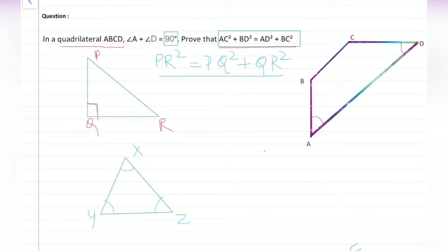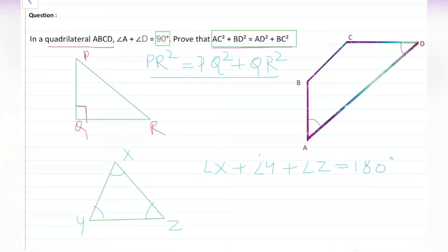Now how do we apply this to our question? You will need to do a little construction. Since angle A plus angle D is 90 degrees, if we form a triangle, that remaining angle will be 90 degrees. Let's go to the diagram and see what we can do and how to start the question.